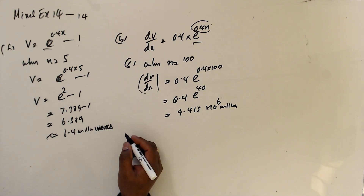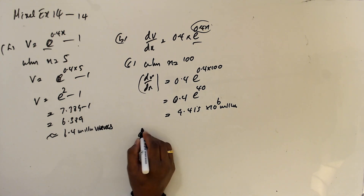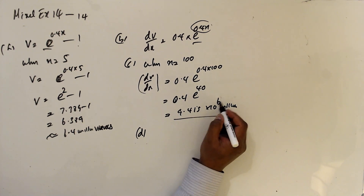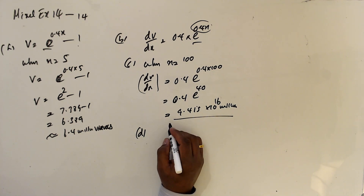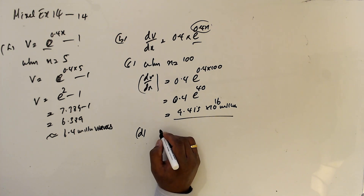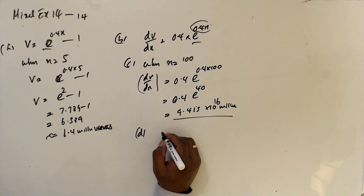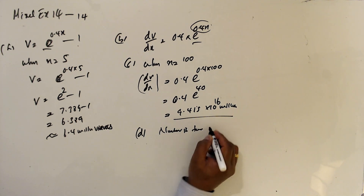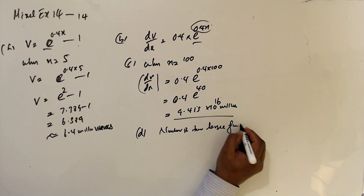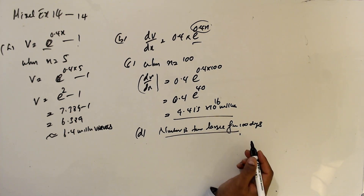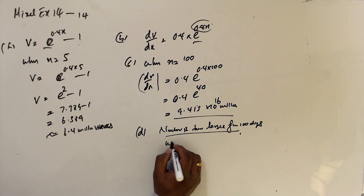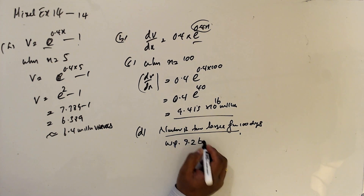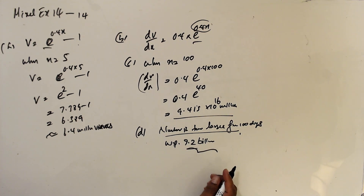Part C talks about the rate of change, meaning dV/dx. When x equals 100, dV/dx equals 0.4 e to the power (0.4 times 100), which is 0.4 e to the power 40. This gives approximately 9.4 times 10 to the power 16 million. Part D asks you to comment on the validity of the model — the number is extremely large, likely exceeding the world population of about 7.02 billion, so the model is not practical.